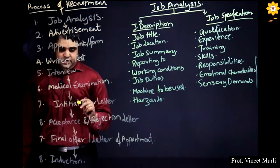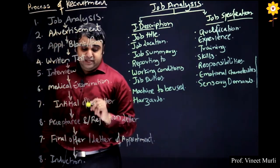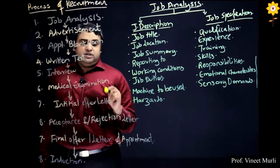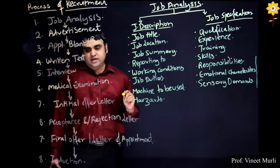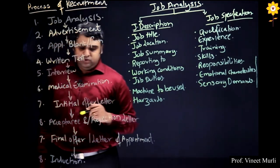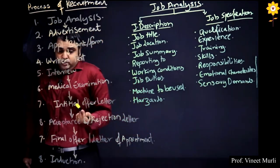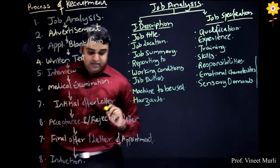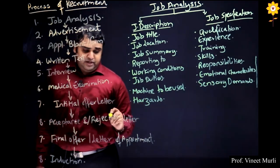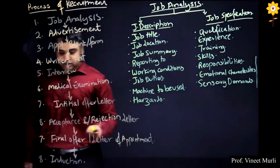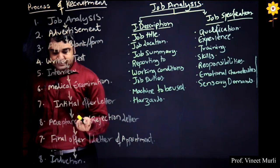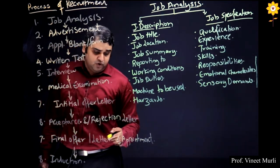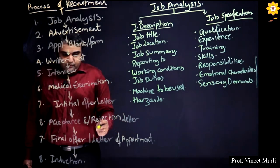You are then offered an initial offer letter. Certain companies go for a three-month apprenticeship program. If they like your work and performance, you get an acceptance or rejection letter. If it is a rejection letter, you will have to search for another job. If you are accepted, you go ahead and receive a final offer letter or letter of appointment.